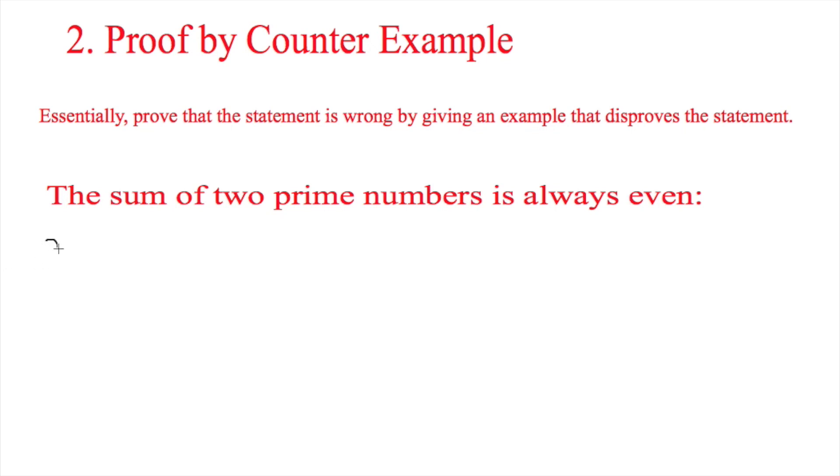However, you have to understand that 2 is a prime number, and now this is essentially your answer. Now I will write PM for quickness. Now this means that if I do 2 plus 3 is equal to 5, 5 is odd. Now that means that the statement is not true because I have clearly shown just one example which has disproved the statement. And that's all you need for proof by counterexample.